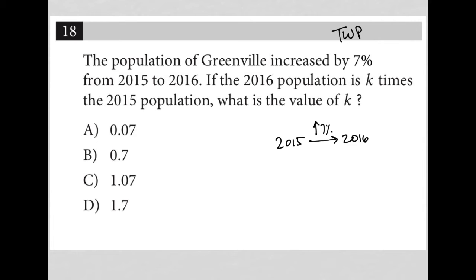If the 2016 population is K times the 2015 population — I don't know what the 2015 population is, so I'm going to call that X. It's telling me that the 2016 population is K times the 2015 population, which means I'd have to call this KX.